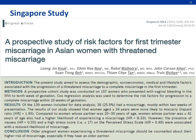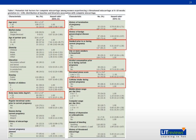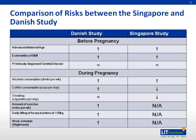A comparison was made with a study done in Singapore in 2013 for Asian women. The same results were found for advanced maternal age, extremes of BMI, previously diagnosed genital disease, and alcohol consumption. There were varied results for coffee consumption and smoking. Additionally, the Singapore study found that women who had a partner older than 41 years had an eight times higher risk of miscarriage.